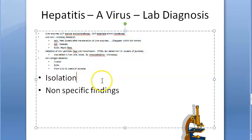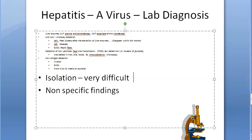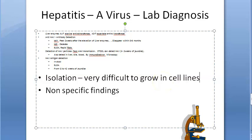Regarding virus isolation, the hepatitis A virus is very difficult to grow in a cell line. Although various primate cell lines are susceptible, HAV is the only hepatitis virus where isolation has been attempted — and even that is very difficult. Isolation is generally not practical.